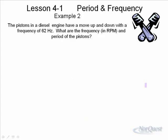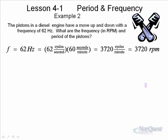So they're telling you that the frequency is 62 Hertz. Well, of course, that's cycles per second. So to convert cycles per second to revolutions per minute, we want to take these units. 62 Hertz means 62 cycles per second. Now, of course, to convert seconds into minutes, there are 60 seconds per minute.